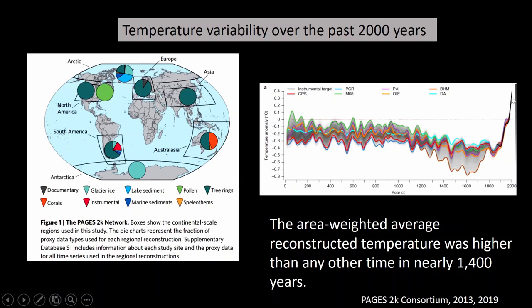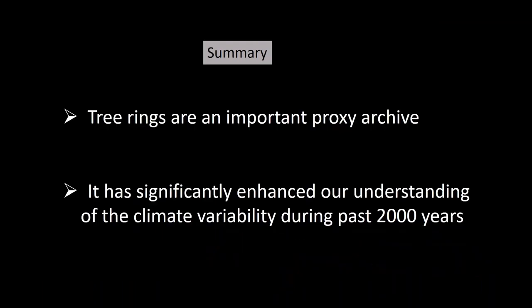In summary, tree rings are very important climate proxies and have significantly enhanced our understanding of climate variability during the past 2000 years. Thank you for attending this lecture.